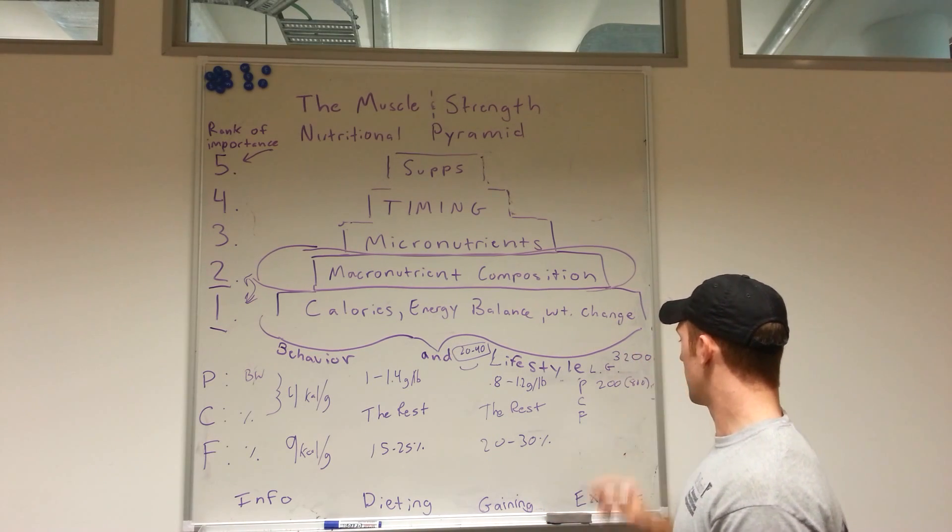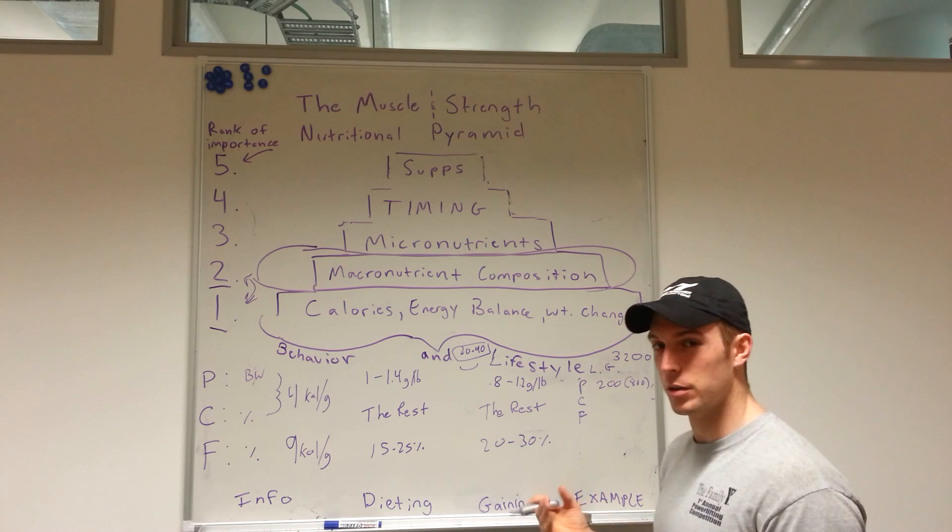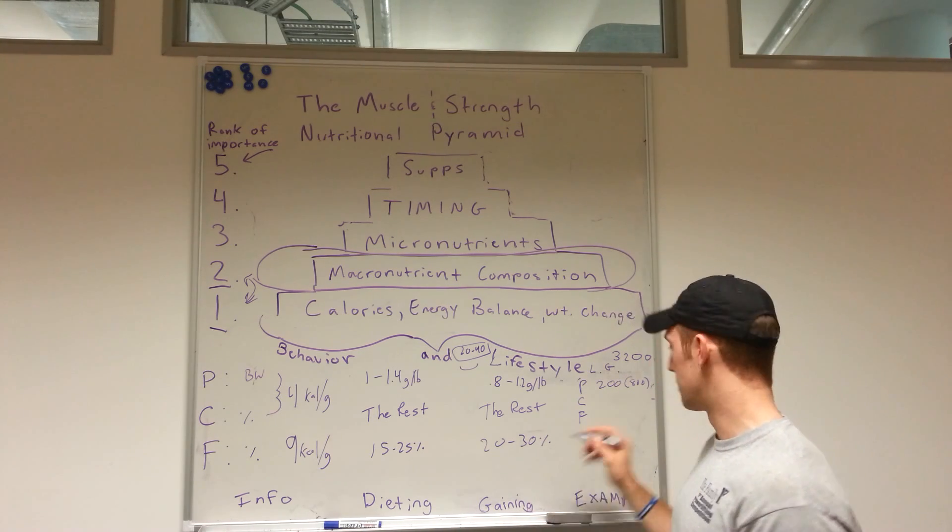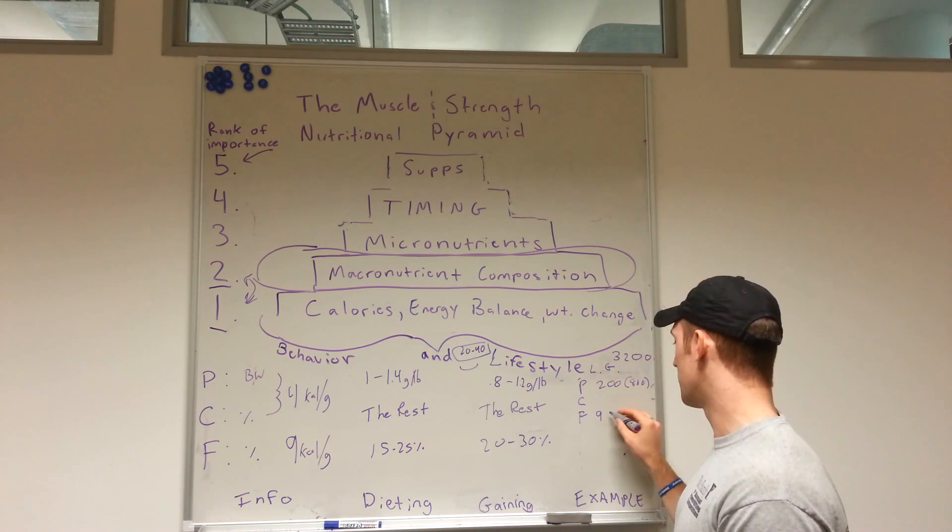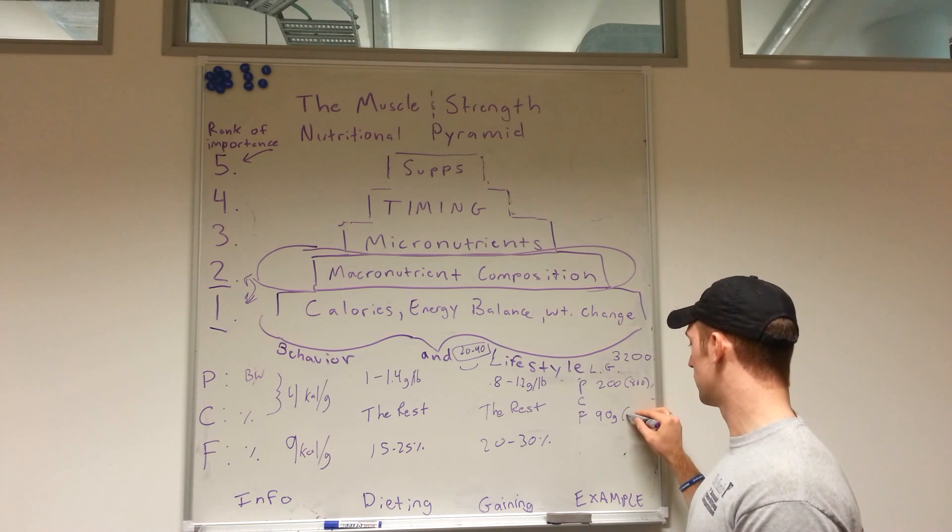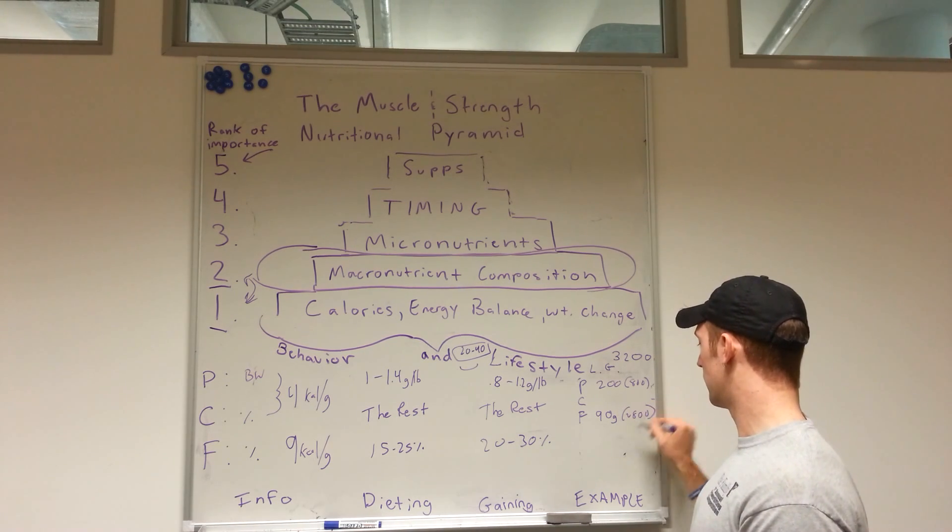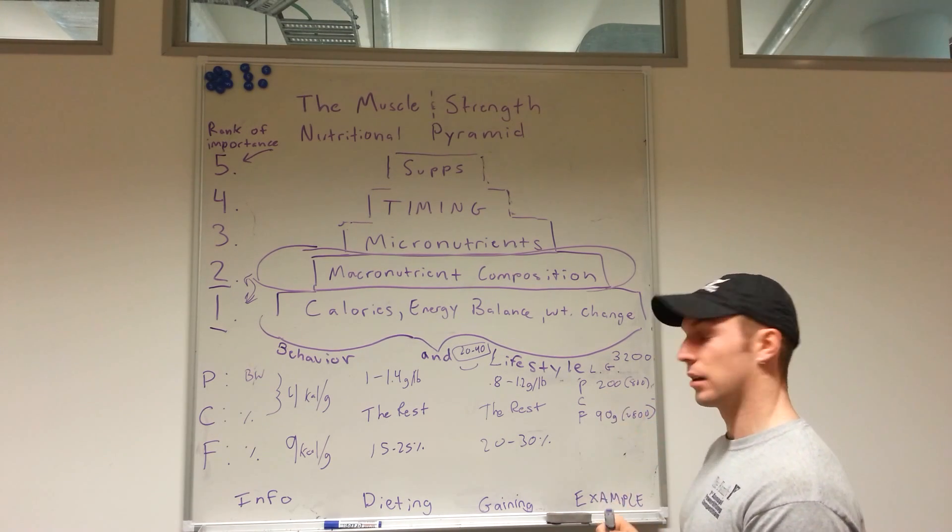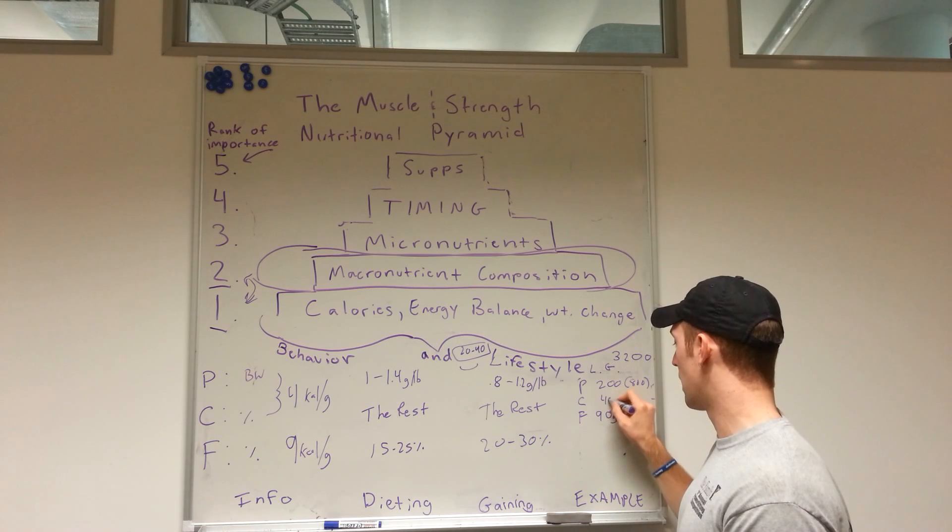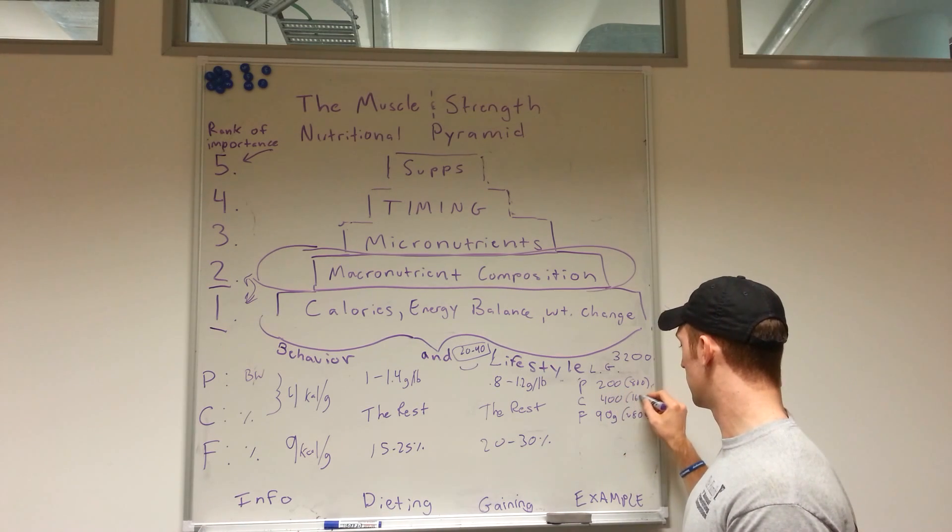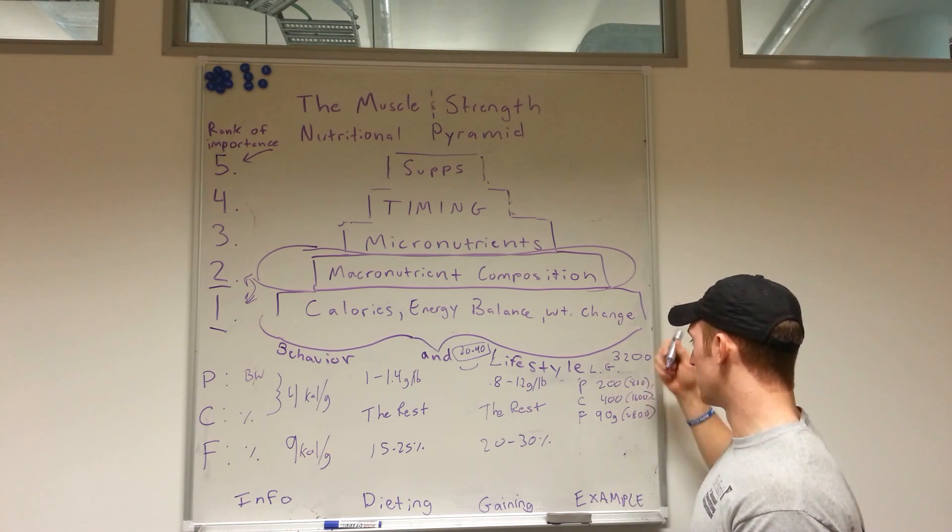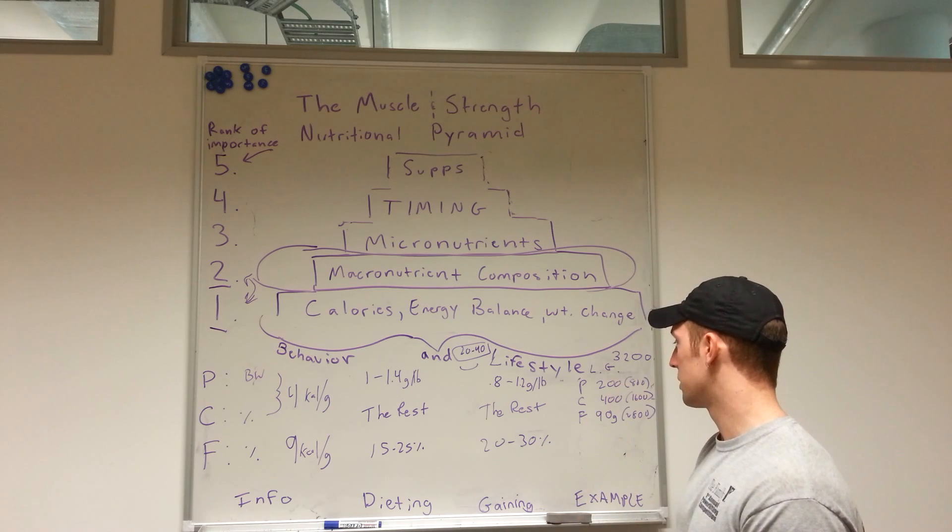3,200 calories, which means 25 percent of that is 800 calories, which is roughly 90 grams of fat. I think that's 810 calories but we'll just keep it there. And that leaves us with another 1,600 calories left, so we'll put his carbs at 400. And that adds up to roughly 3,200 calories. Boom. That is your lean gaining diet for the guy that I just talked about.